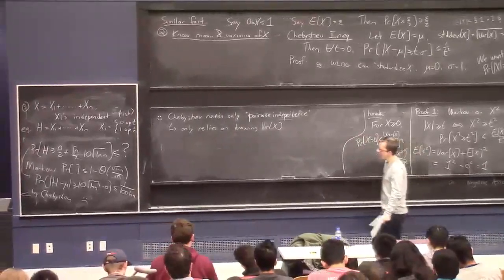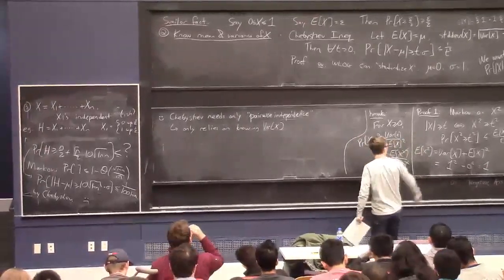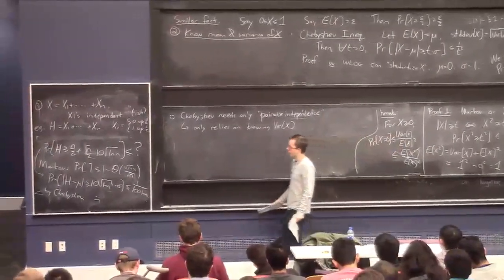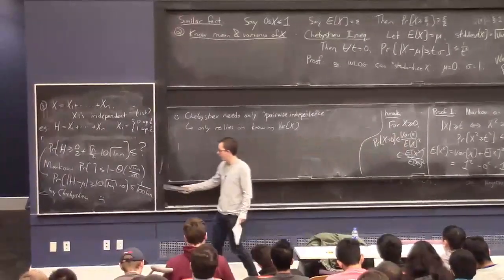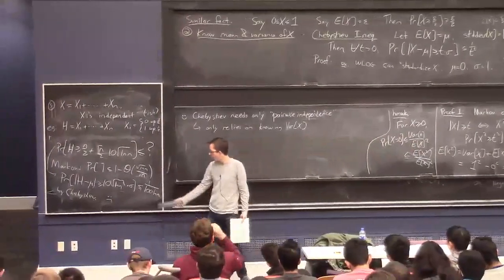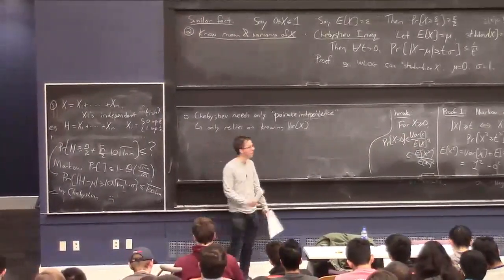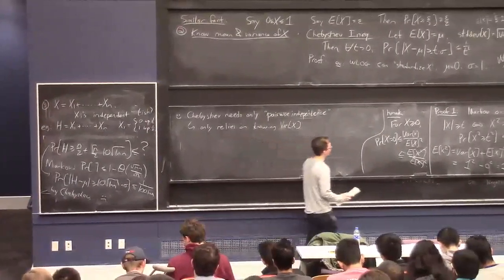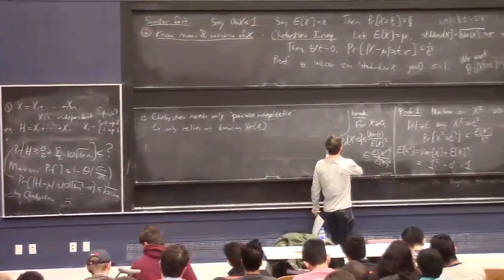Motivated by this, we want to go even further and try to get a better bound than 1 over 100 ln n using Chebyshev's inequality.